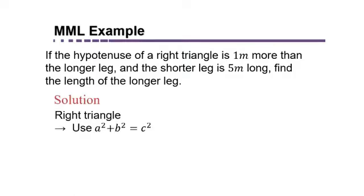Since you see that it's a right triangle and you're talking about the lengths of the legs, use the Pythagorean theorem. We have a squared plus b squared equals c squared.